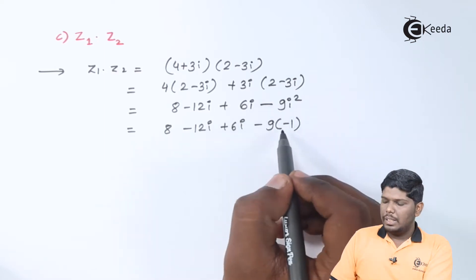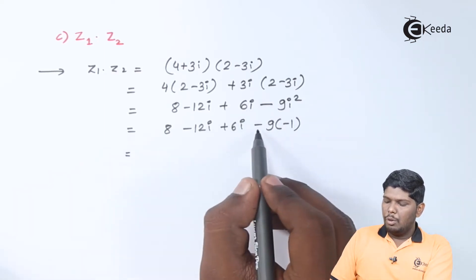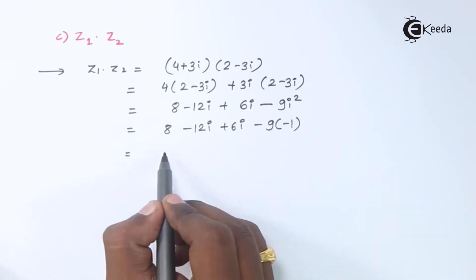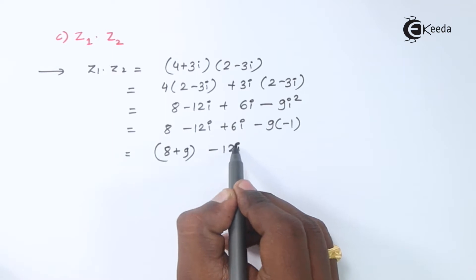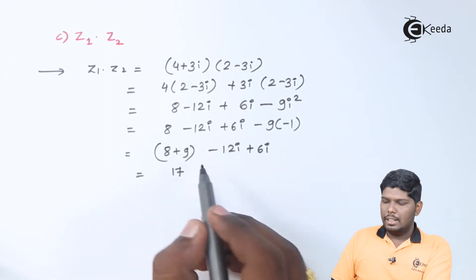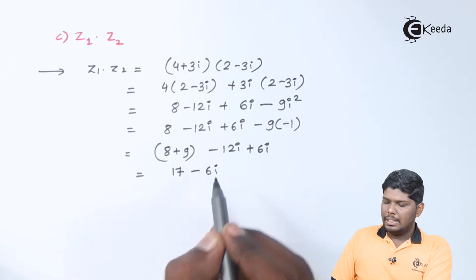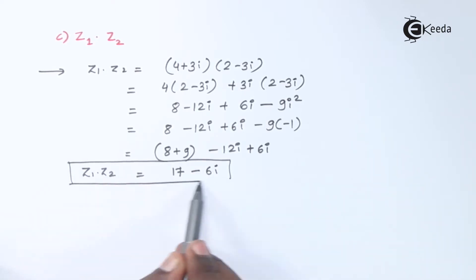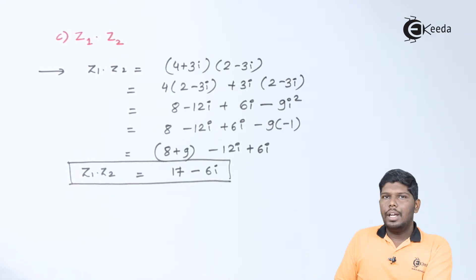The value of i square is minus 1. So this will give you minus 9 into minus 1 as plus 9. And 8 plus 9 will be the real part, will give you 17. And minus 12 plus 6 will give you minus 6i. This becomes z1 into z2.